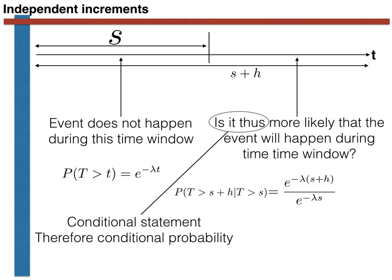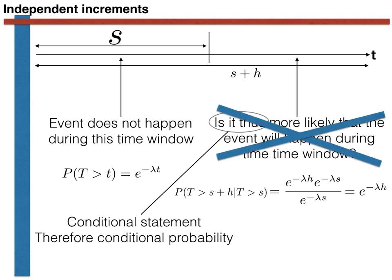We can calculate both numerator and denominator using P(T > t) = e^(−λt). Inserting t = s + h gives the numerator, and t = s gives the denominator. We can write the exponent of a sum as a product of exponents, so the numerator becomes e^(−λs) · e^(−λh). The factor of e^(−λs) cancels between numerator and denominator, leaving e^(−λh). In other words, the conditional probability that the event does not happen in the next h seconds, given that s seconds have already elapsed with no arrival, is identical to the probability it does not happen in the first h seconds. The fact that we have waited s seconds does not affect how long we will subsequently have to wait.